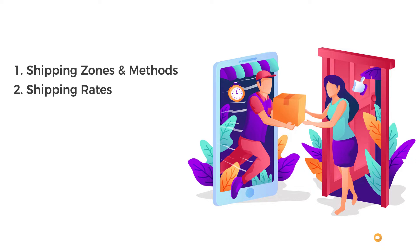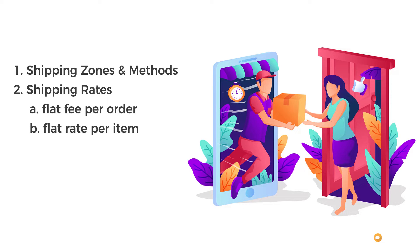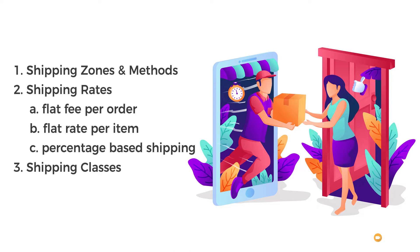The next thing is shipping rates. We have three basic kinds of shipping rates we can use with WooCommerce straight out of the box: a flat fee per order, a flat rate per item, and percentage-based shipping. We'll cover all three of those methods and look at some more advanced ways of working with those. And finally, we have stage three: shipping classes, which allow us to create product-specific charges applied on a product-by-product basis.